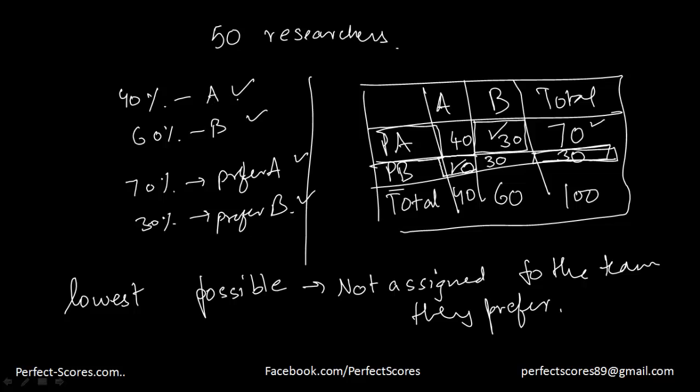Now what I have done is I have minimized this and this. That means the number of people who will not get the teams that they are assigned are 30% of the total researchers. That is 50. So what is 30% of the total researchers? That is going to be equal to 15 which is nothing but my answer option A.